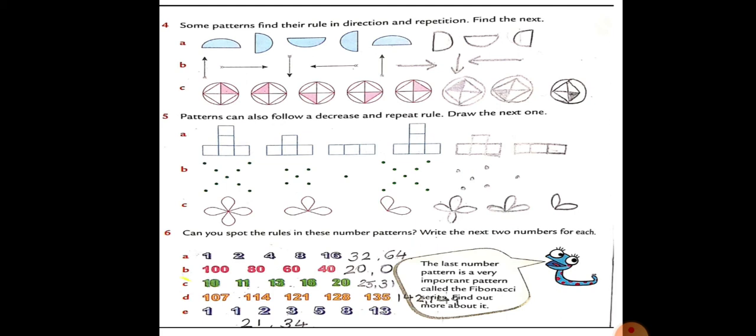Dekho: 1, 2, 4, 8, 16 — 1 ka double karke aaya 2; 2 ka double karke aaya 4; 4 ka double karke aaya 8; 8 ka double karke aaya 16; 16 ka double karoge toh aayega 32; aur 32 ka double karoge toh 64.